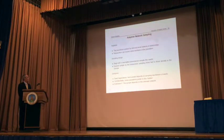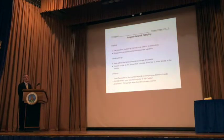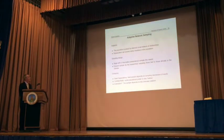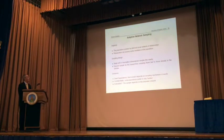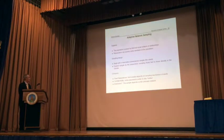A key statistical challenge is doing inference based on this design. In most applied cases, we know the social network exists, but we only observe the social network at the same time as we observe the outcome variables. Dealing with that unknown social network, which is at the heart of the sampling design, is a fairly substantial challenge.